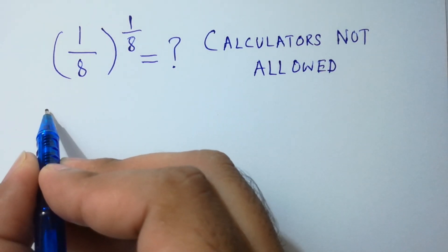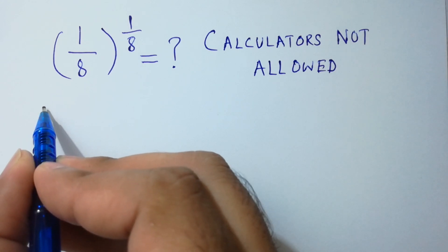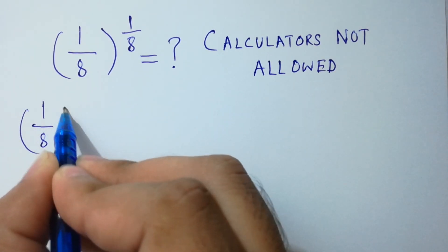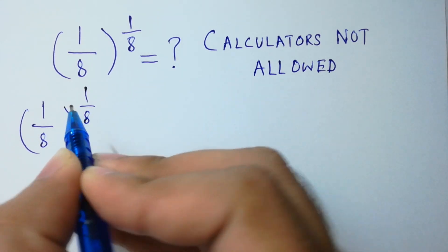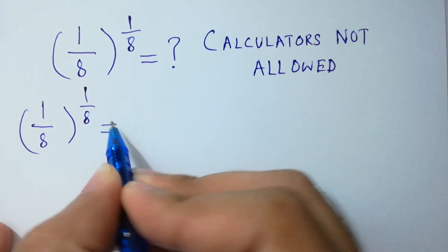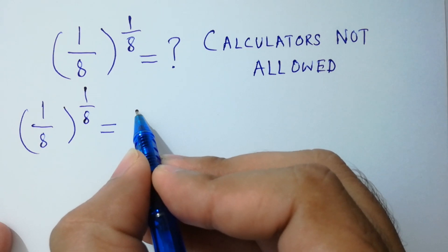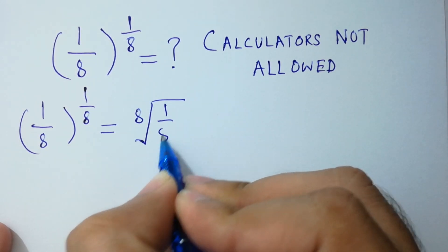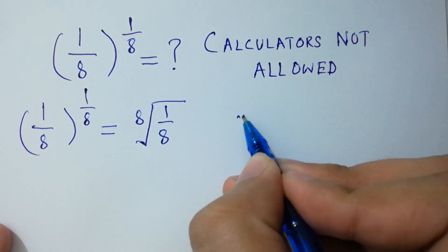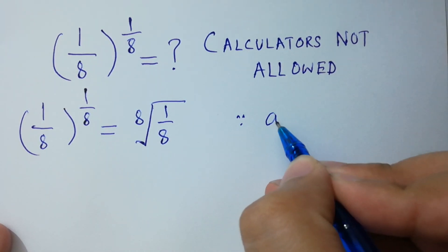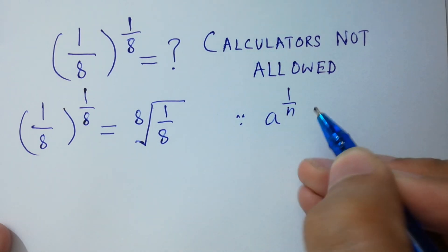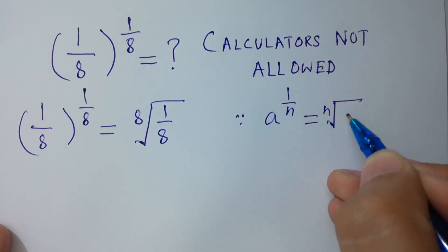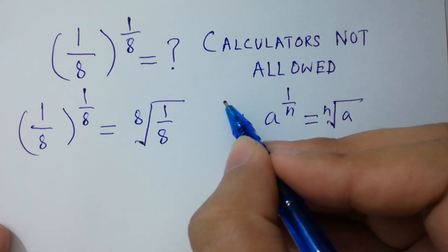We can write 1 over 8 to the power 1 over 8 as the 8th root of 1 over 8, since a to the power 1 over n equals the nth root of a. Clear?